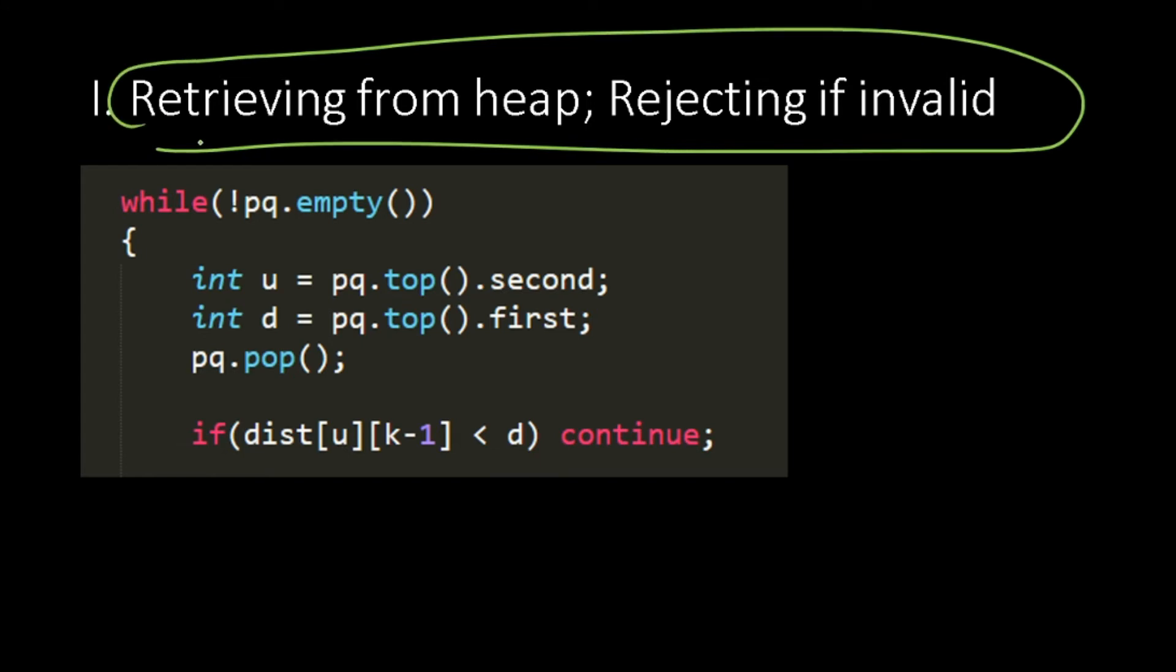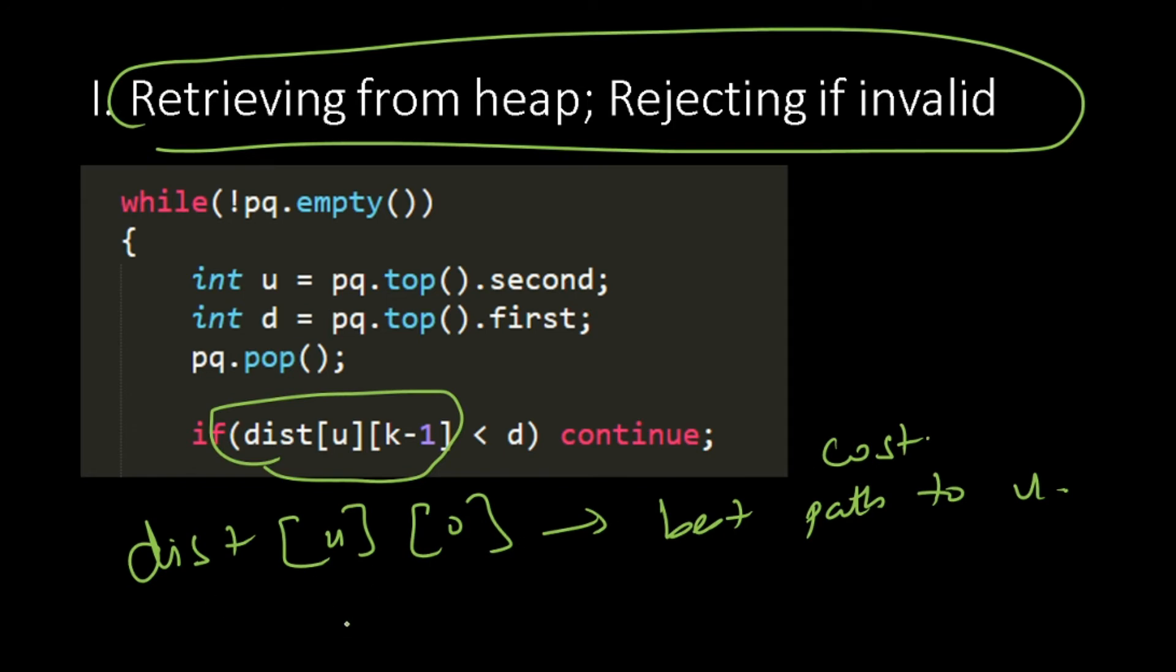Before we discuss this, first I want to discuss this quantity. What is distance[u][0], this means the best path to u, best path cost to u.